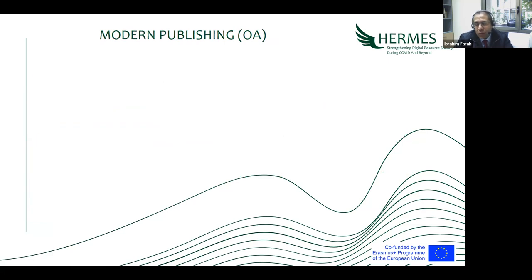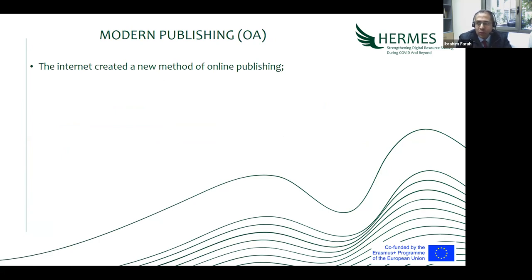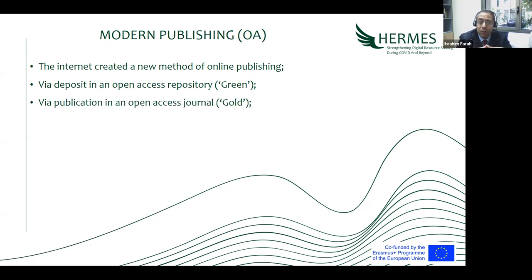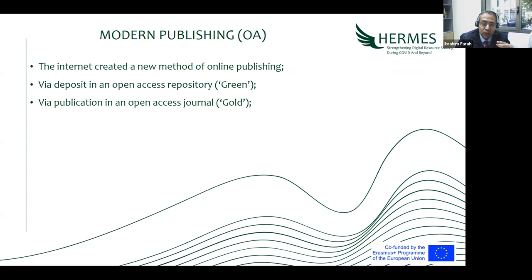In the modern way of publishing — open access publishing — we no longer rely on print. We rely on online digital publication. Since the internet was created, we have a new method of online publishing. We can publish via different modes: in an open access repository, which is called the Green Route, or in open access journals, which is called the Gold Route. Some commercial publishers now also offer the option to pay a fee to make an individual article open access.